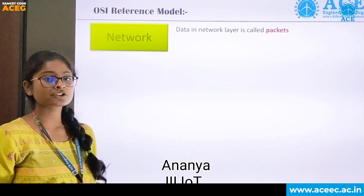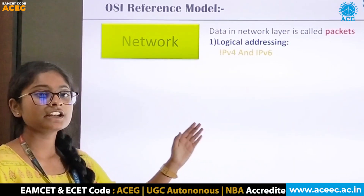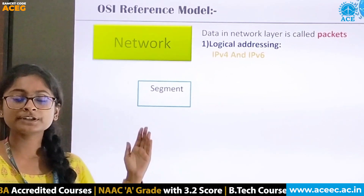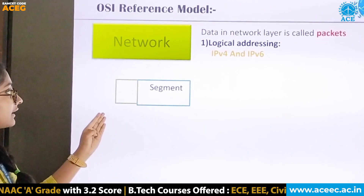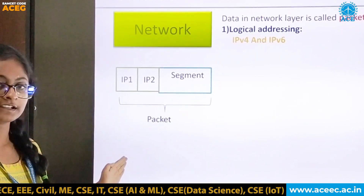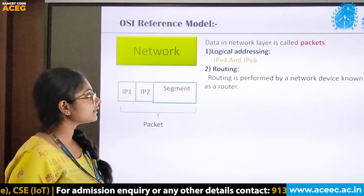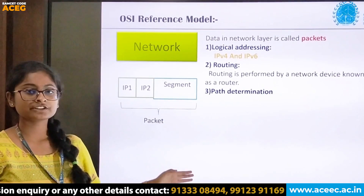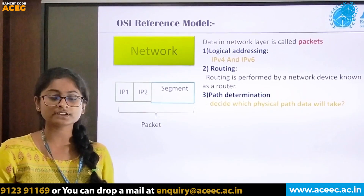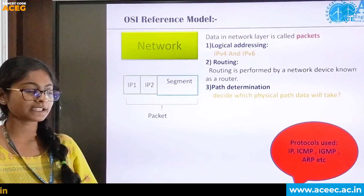In the network layer, data is called packets. Three operations are performed: logical addressing, routing, and path determination. In logical addressing, IPv4 and IPv6 headers are used; a segment from the transport layer is attached with the receiver's and sender's IP addresses to form a packet. Routing is done by a router to enable end-to-end delivery. Path determination helps choose the shortest path for data transmission. Protocols include IP, ICMP, IGMP, and ARP.